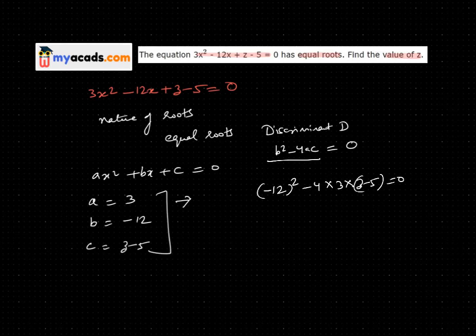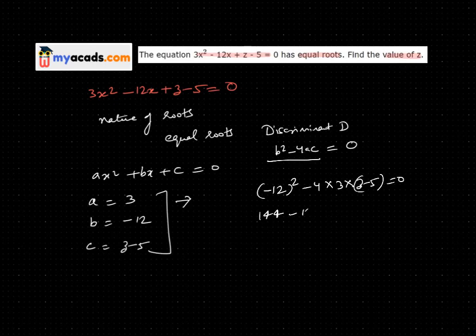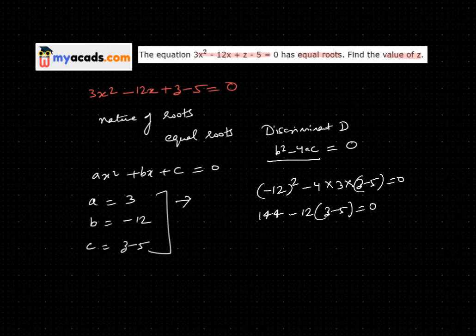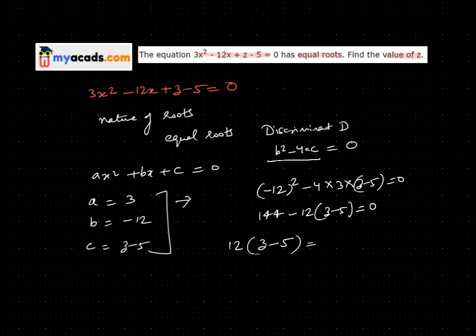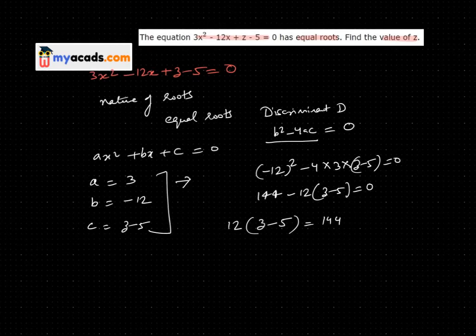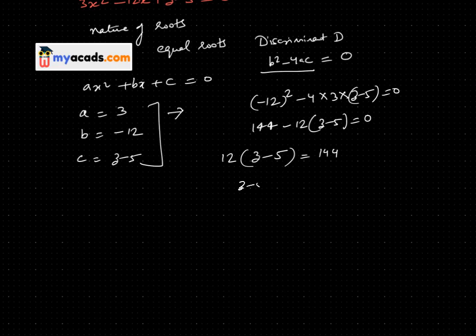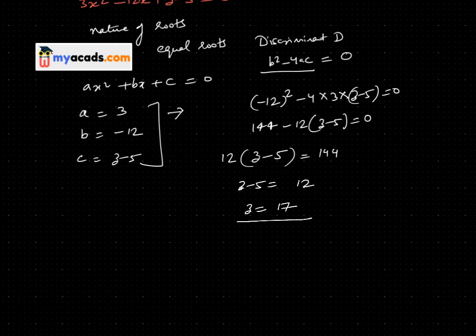Minus 12 whole square is 144, minus 12 times z minus 5 equals 0. So z minus 5 equals 12, therefore z equals 17. So this is my answer.